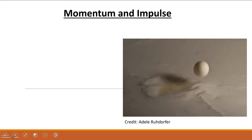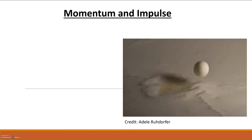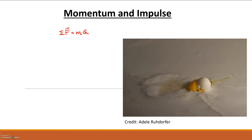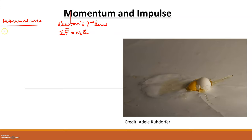In module 7 we're going to be talking about momentum and impulse. These are not entirely new ideas because they relate to things we've already discussed. Momentum deals directly with Newton's laws — we can actually rewrite Newton's second law, where the sum of forces equals mass times acceleration, in terms of momentum. Momentum is denoted by the variable p, it's a vector, and it's equal to mass times velocity.